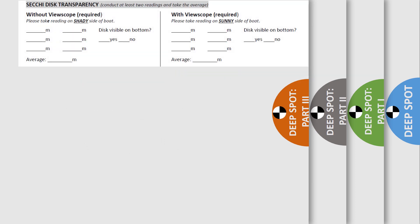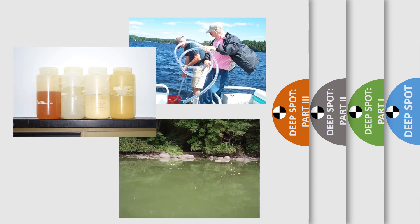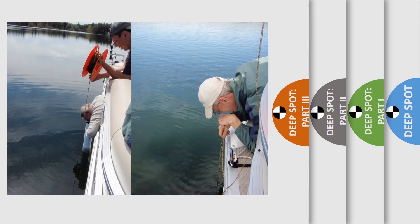Consult your field data sheet. The next thing you'll do is measure clarity or transparency. Transparency is a subjective measurement and can be affected by things such as algae, water color, particulate matter, waves, and sunlight. We ask that you measure clarity via two methods, with and without the viewscope.